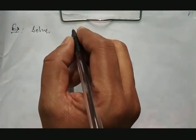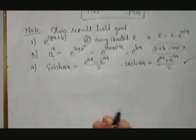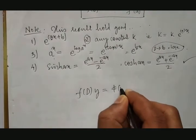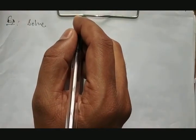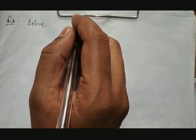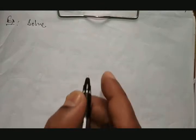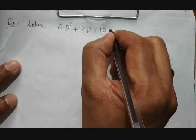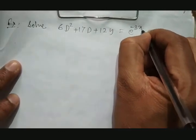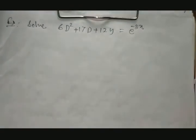Now we will take one example. Solve: (6D² + 17D + 12)y = e^(−3x). This is directly an exponential function. We need to find both the complementary function and the particular integral. This is a Type 1 problem where the exponential is given as the function on the right-hand side.